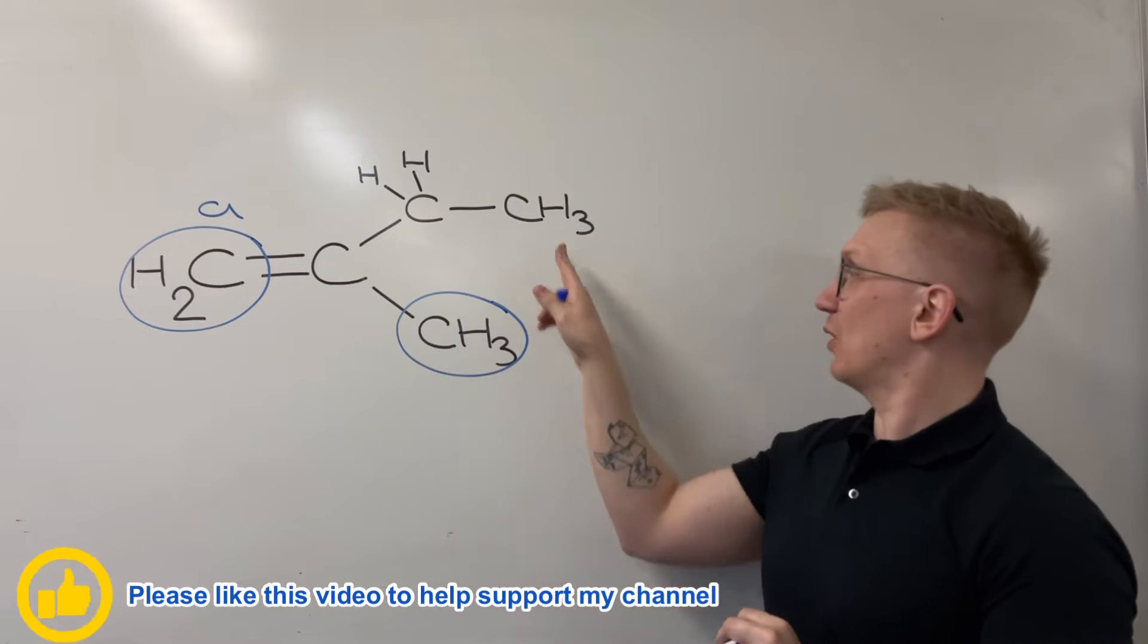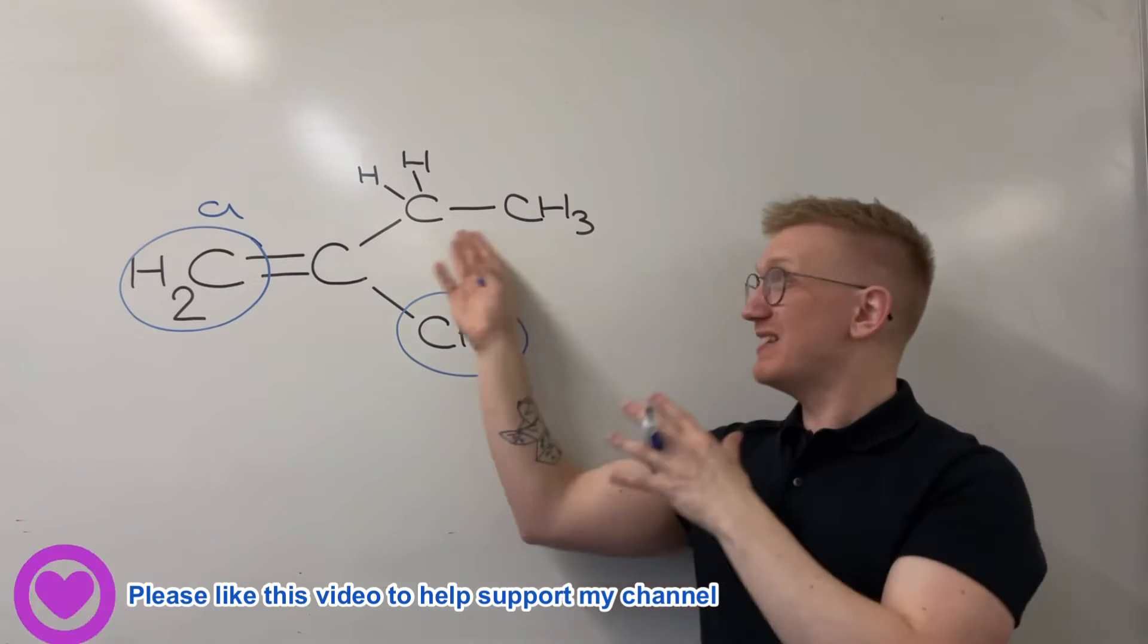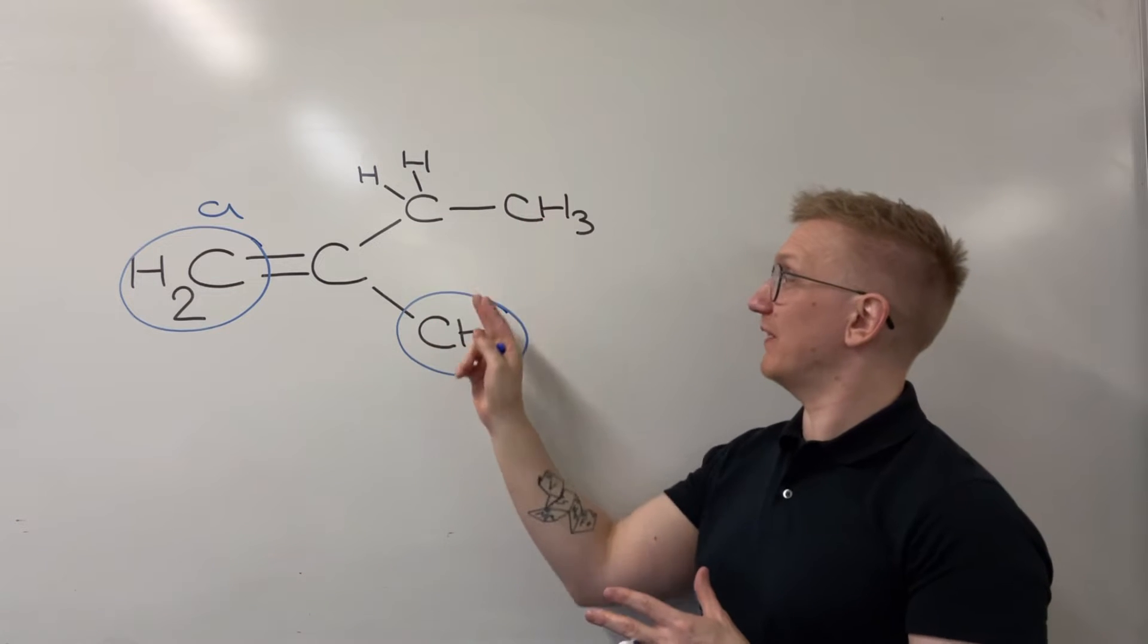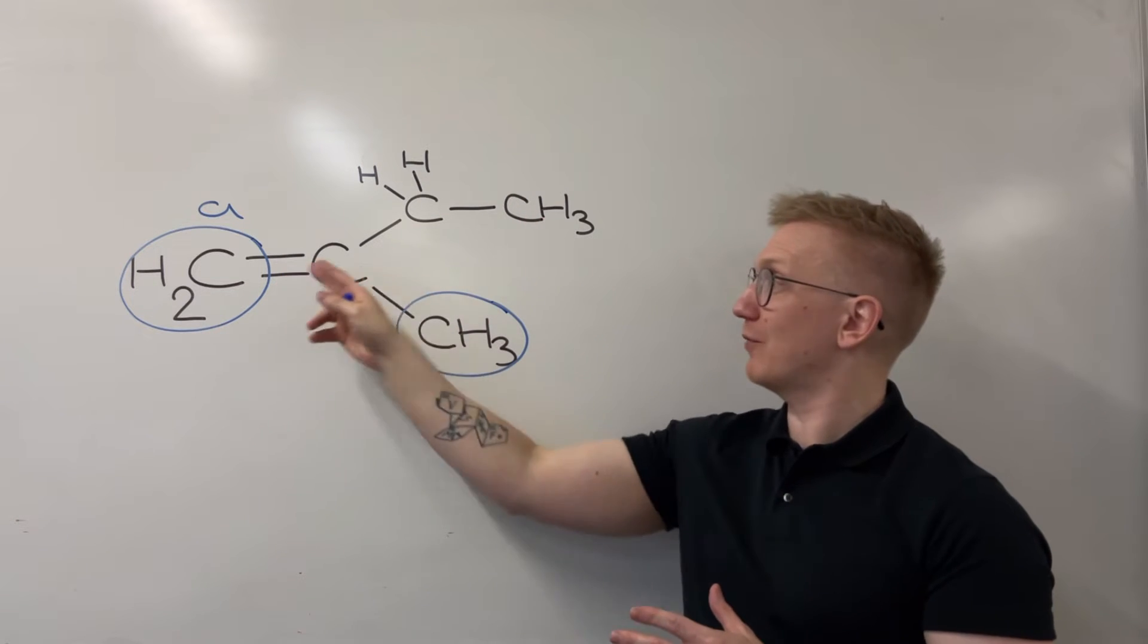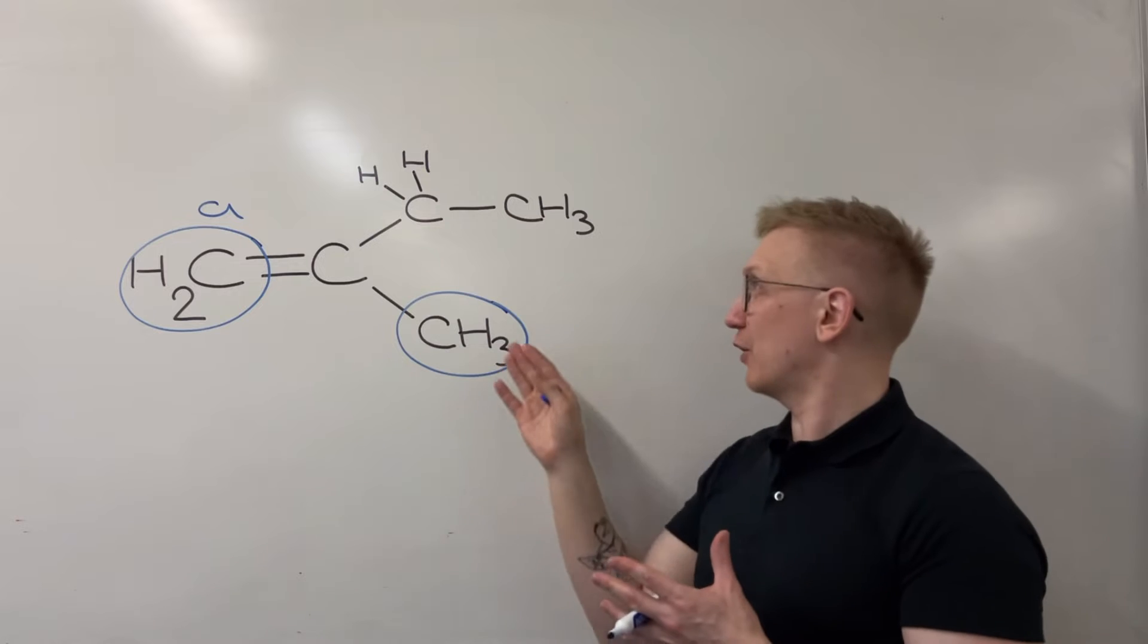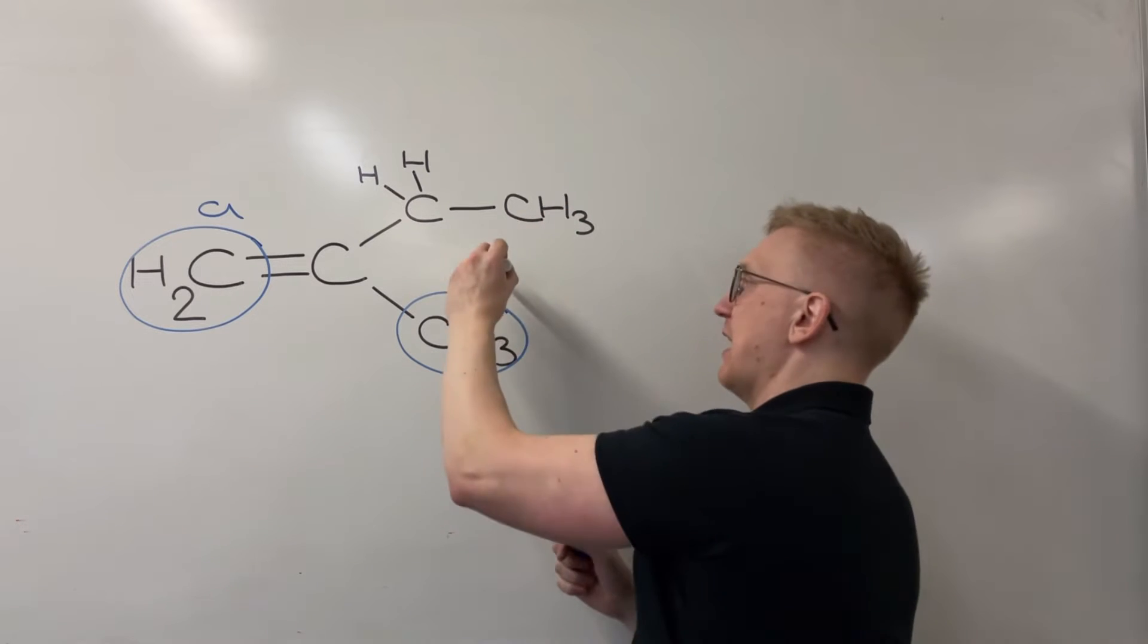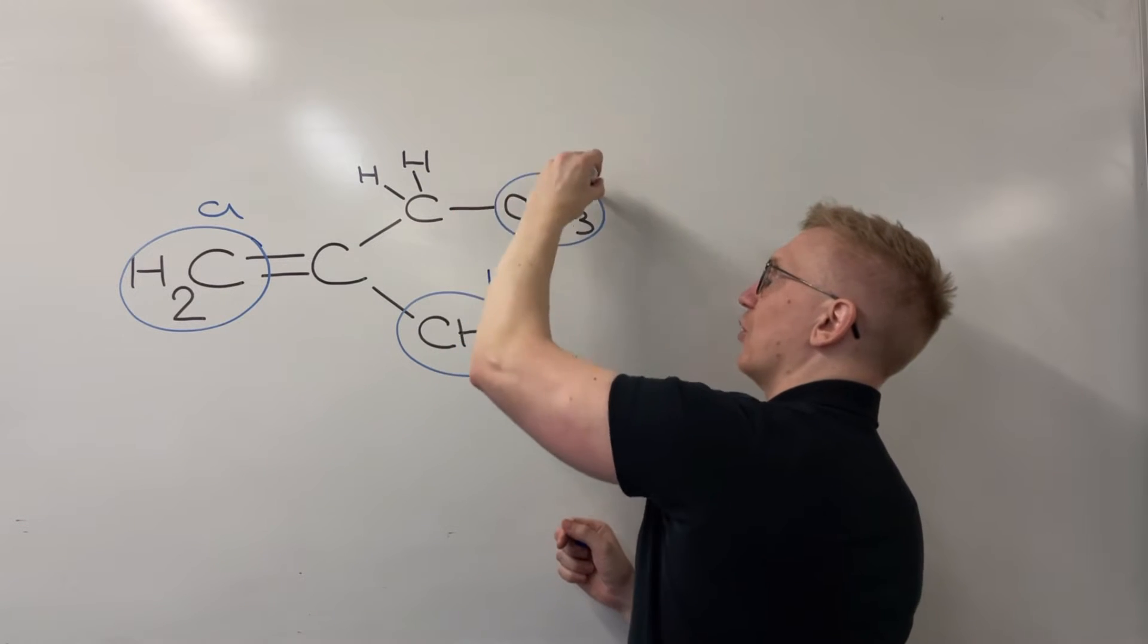And the same could be said for this CH3 just here. You might look at that and think, well, that's a CH3 as well. But they're in different environments. This one's bonded to a CH2, and this one's just bonded directly to this double bond here. And so they're definitely different from each other. So let's call them B, and let's call them C.